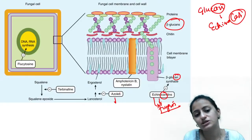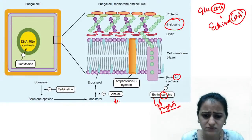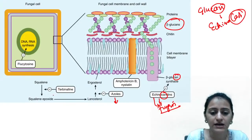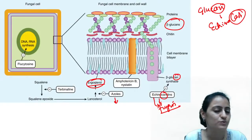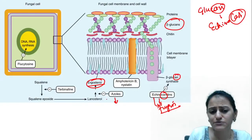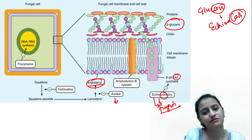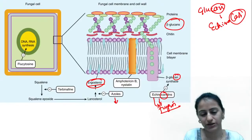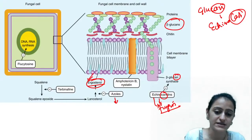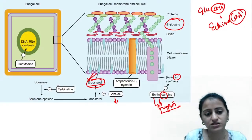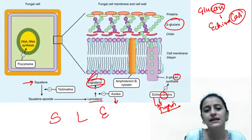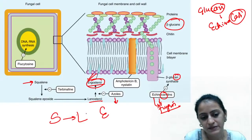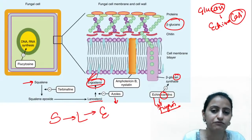Then you have azoles, which can be imidazoles or triazoles. Azoles and terbinafine act on ergosterol — a component unique to fungi not present in other organisms, which is why these drugs specifically kill only the fungus. For making ergosterol, the pathway is: squalene → lanosterol → ergosterol. Remember it as SLE — squalene forms lanosterol, which forms ergosterol.